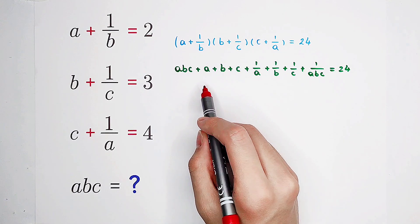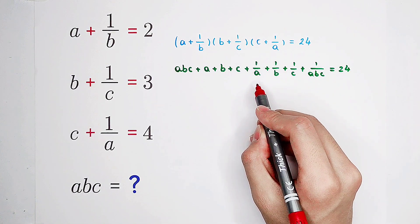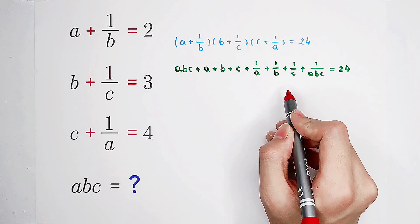However, we also get a plus b plus c plus one over a plus one over b plus one over c. Don't worry.